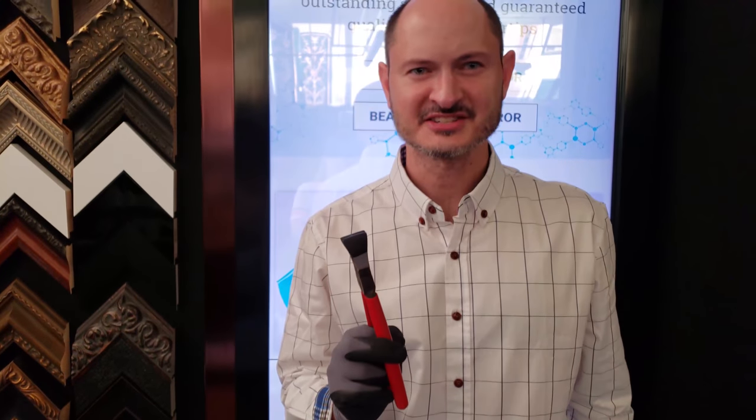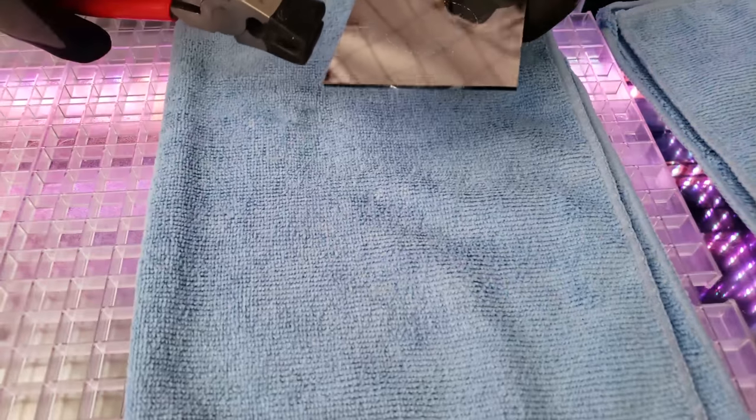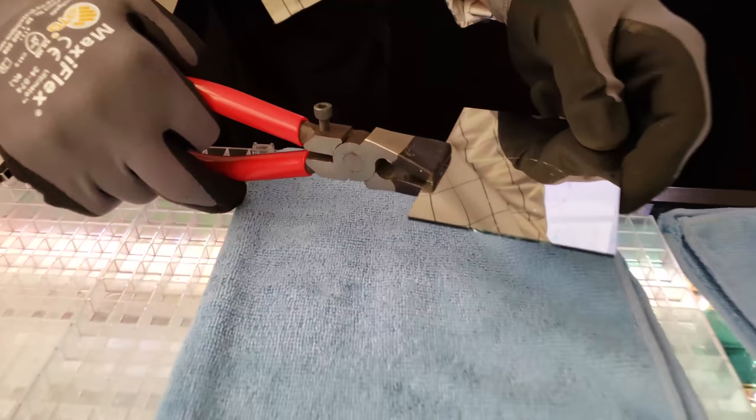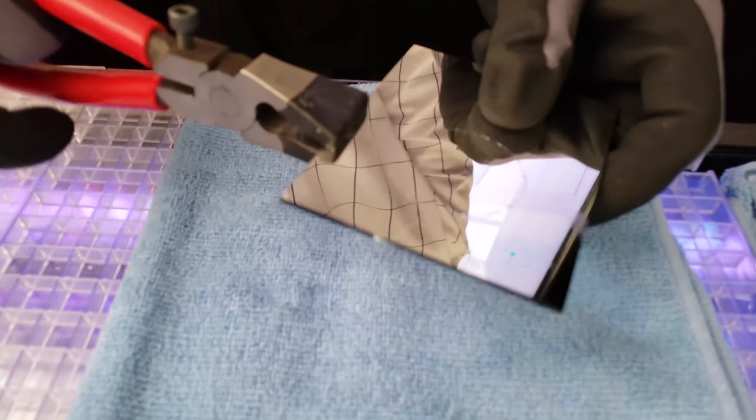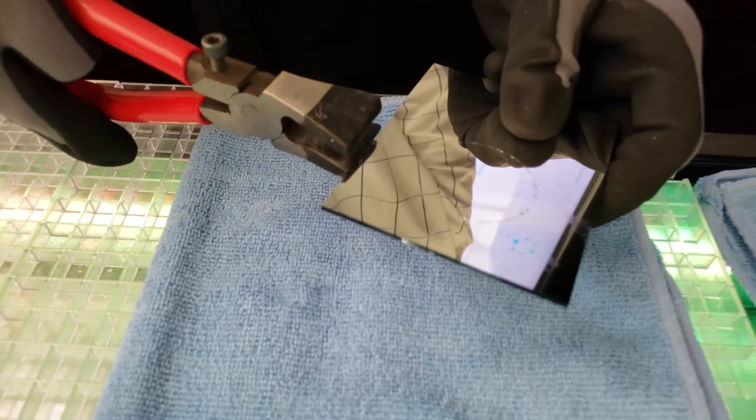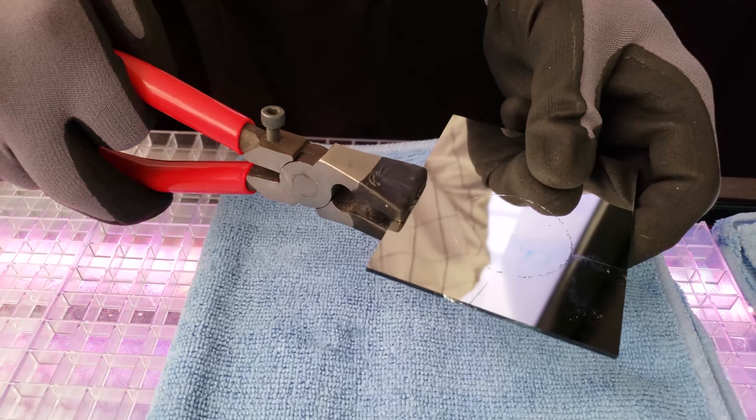Next, take your running pliers and very gently line up to your score line and break the glass. Just go very slow. Did you hear that crack? That means the crack is propagating.